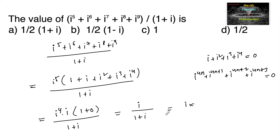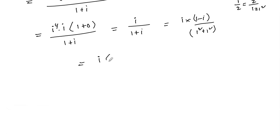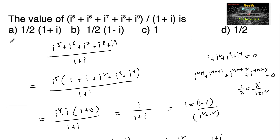This equals i times (1 / (1+i)). Using 1/z = z̄ / |z|², the conjugate of 1 + i is 1 − i, and |1+i|² = 1² + 1² = 2. So we get i(1 − i) / 2 = (i − i²) / 2. Since i² = −1, this becomes (1 + i) / 2, or (1/2)(1 + i), which is the first option.